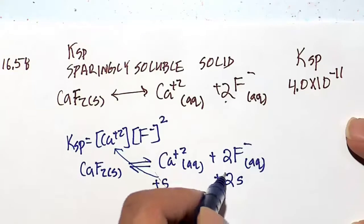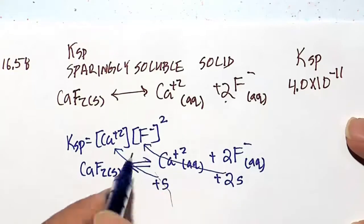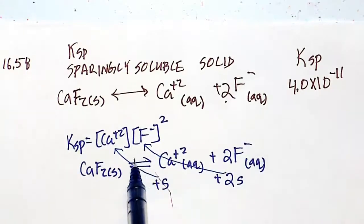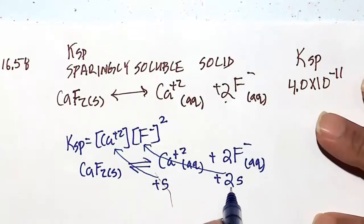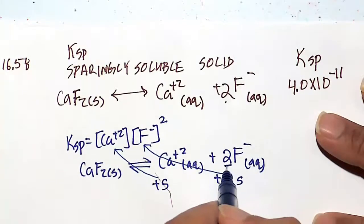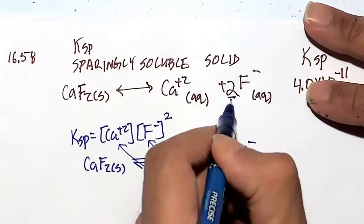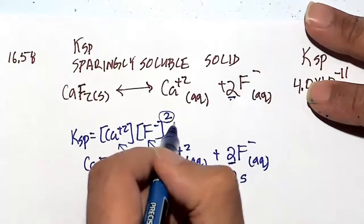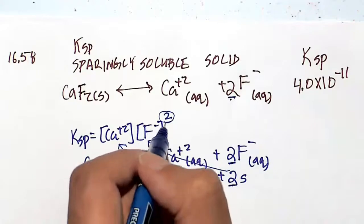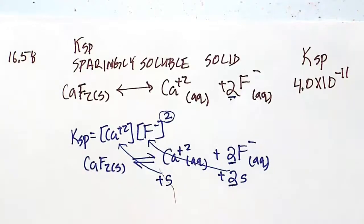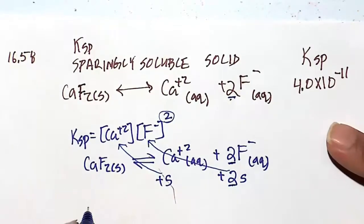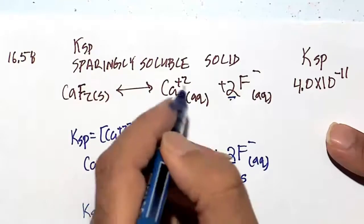So let's plug that in to our Ksp expression. It's going to be 2s squared for the fluoride ion, correct? While it's just going to be plain old s for calcium ion. So the 2 and the 2 there are the 2 exponent. The square comes from the law of mass action. All of these little nuances need to be followed when solving this problem in determining molar solubility.